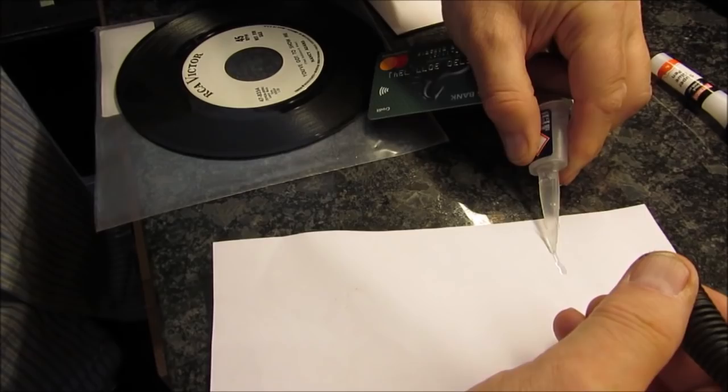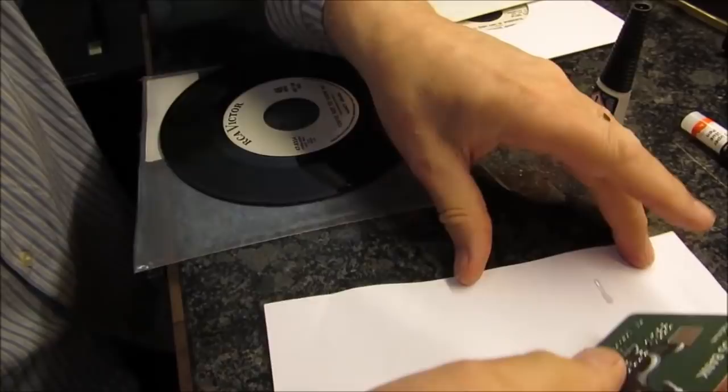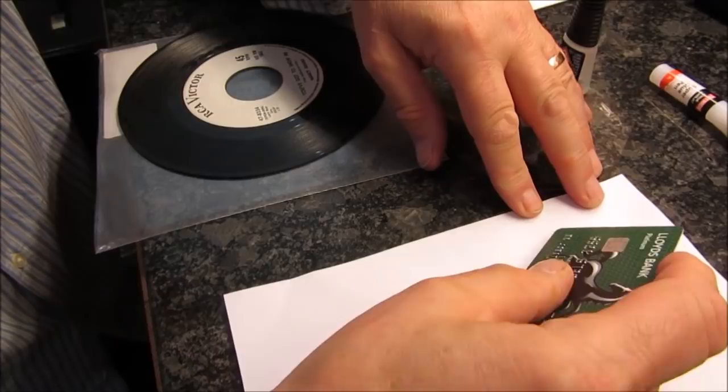I'll tell you why: if you get any of this in on the grooves, that's your record done for. I haven't devised a way yet to get superglue out of records.